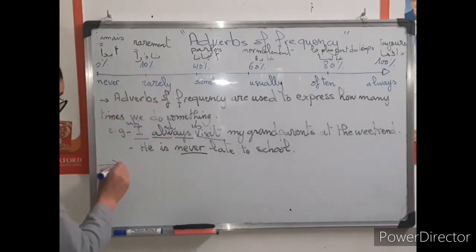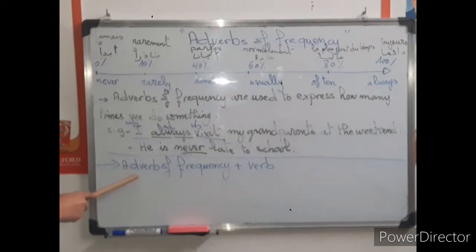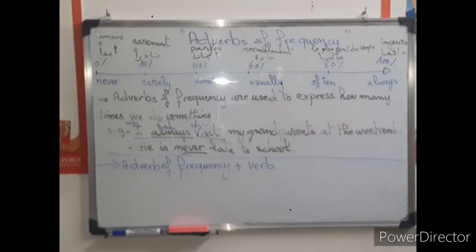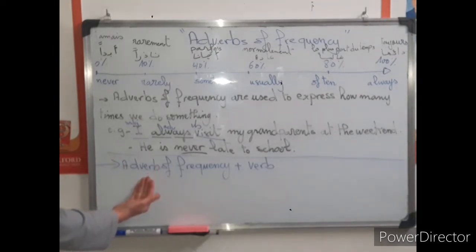So this is the rule: subject + adverb of frequency + verb. For example: I never go to school late. I sometimes visit my friend on Sunday. I usually eat pizza. All these examples have the adverb of frequency — always, sometimes, usually, never, rarely — placed before the verb.